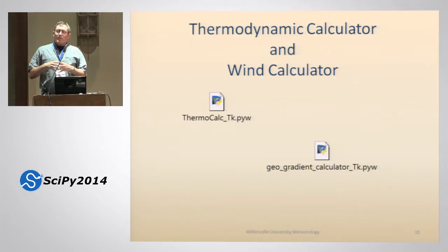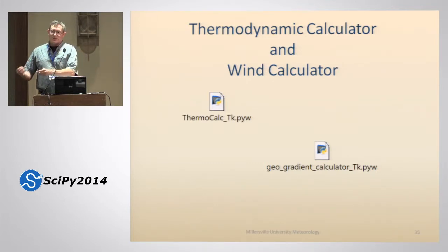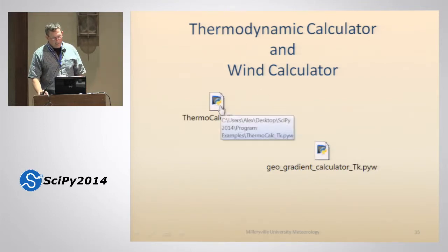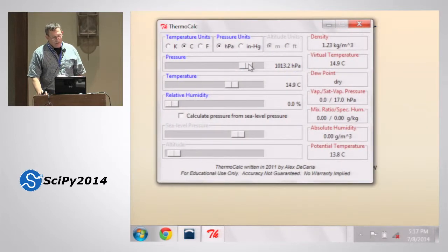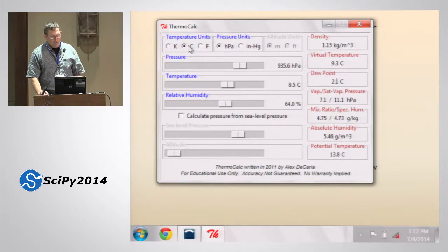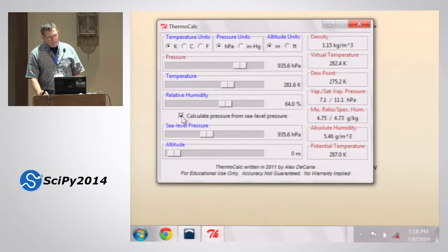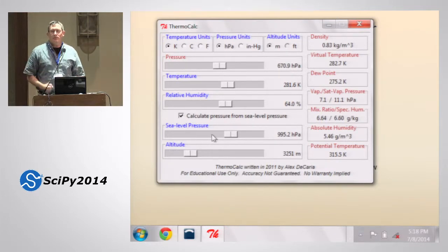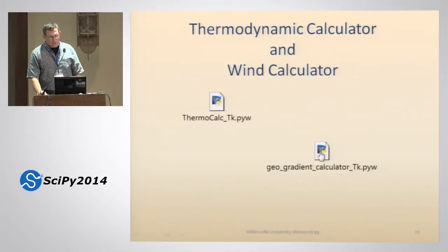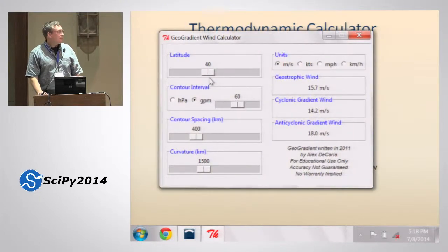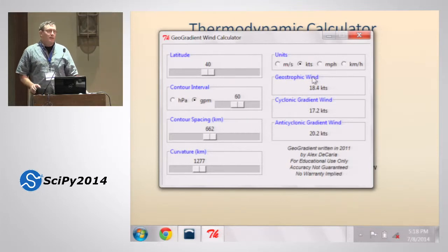For my own use: when making homework assignments in thermodynamics or atmospheric dynamics, there are many tedious calculations. I built a thermodynamic calculator using Tkinter that lets me enter pressure, temperature, and relative humidity with a slider, calculates all other thermodynamic variables, and allows unit switching between Celsius, inches of mercury, or hectopascals. I also built a wind calculator where I input latitude, contour interval, contour spacing, and curvature, and it calculates the geostrophic and gradient winds on the fly.